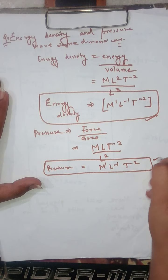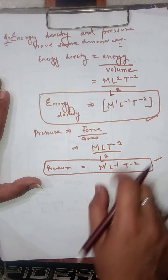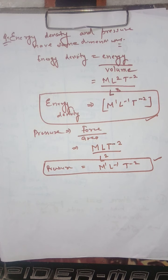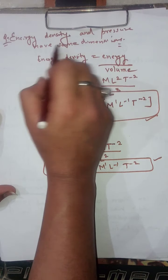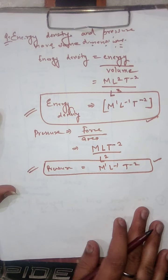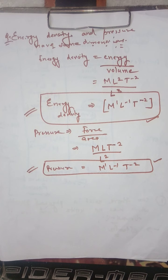So energy density has dimensional formula M L⁻¹ T⁻² and pressure also has dimensional formula M L⁻¹ T⁻². Both are having the same units, therefore both are having the same dimensions. This is our proof that energy density and pressure have the same dimensions.